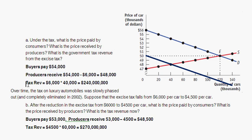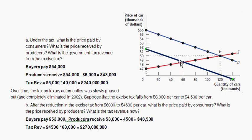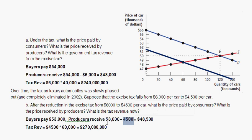The same approach works for Part B. Shifting the demand curve down by $4,500 — $1,000, $2,000, $3,000, $4,000, $4,500 — gives a new equilibrium price of $48,500 and equilibrium quantity of 60,000 cars. Producers receive $48,500, matching our earlier result. Consumers pay $48,500 plus the $4,500 per-car tax, equaling $53,000 per car including tax. That's it — thanks, hopefully this was helpful. Have a good day.